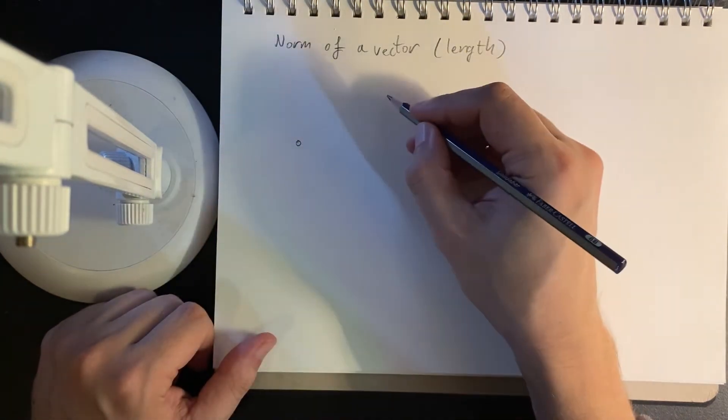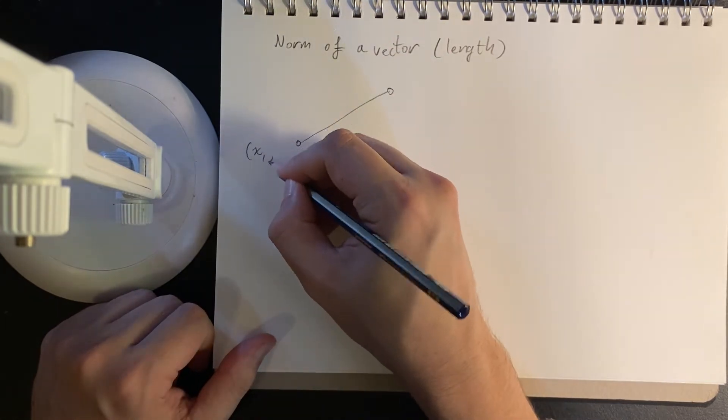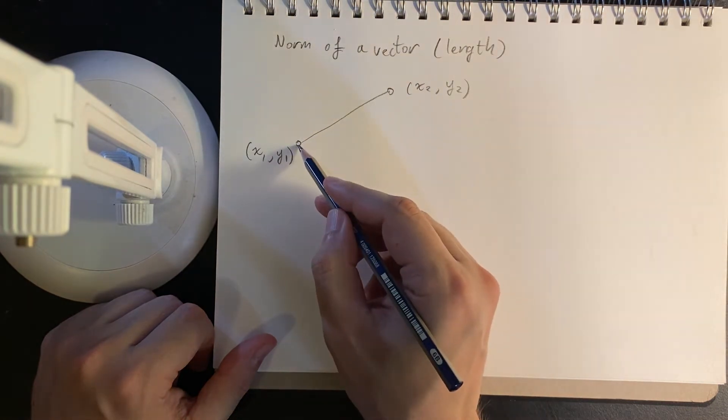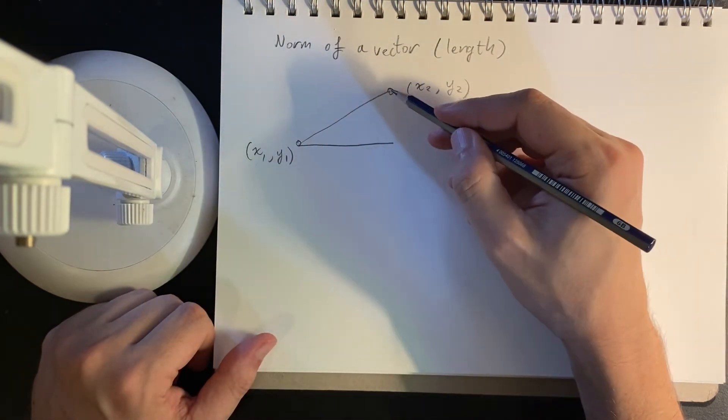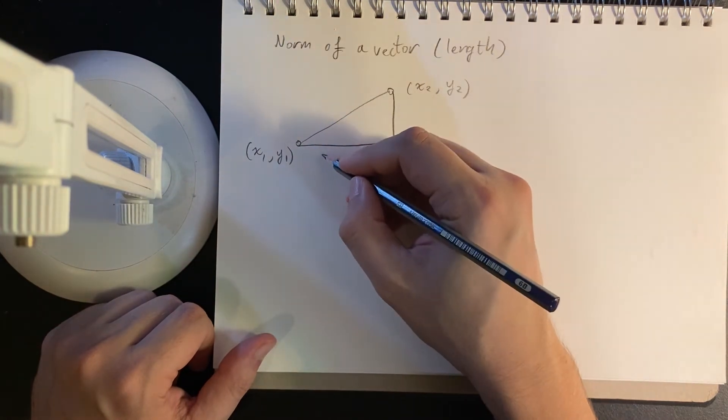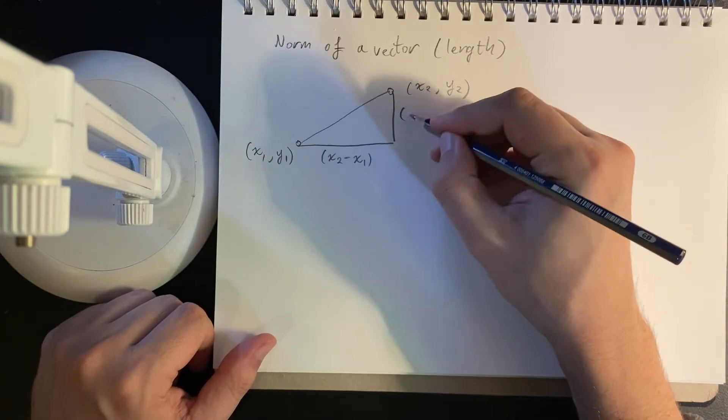If we want to get the distance between two points, then we get the separations, that is the horizontal separation and the vertical separation.